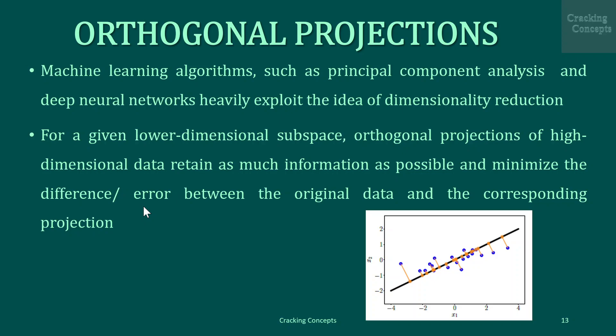Even linear regression can be interpreted using orthogonal projection. For a given lower-dimensional subspace, orthogonal projections of high-dimensional data retain as much information as possible and minimize the difference or error between the original data and the corresponding projection. We can see an illustration: a two-dimensional data set given by blue dots and their orthogonal projections given by orange dots onto a one-dimensional subspace, which is a straight line.